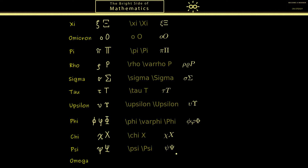With this we've reached the last letter — omega. The lowercase version should not look like a W, and the uppercase version looks like this. Both symbols are used frequently in mathematics, so you can generate them with the corresponding LaTeX commands. Now you know all the Greek letters and the corresponding symbols we use in mathematics. I hope this was helpful and I'll see you in the next video — bye!